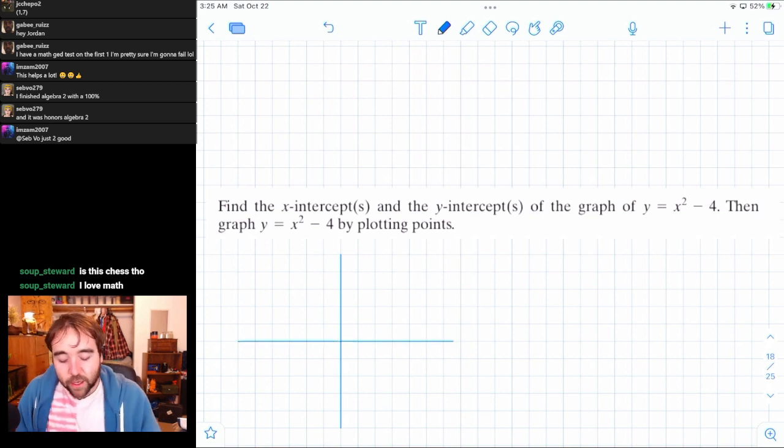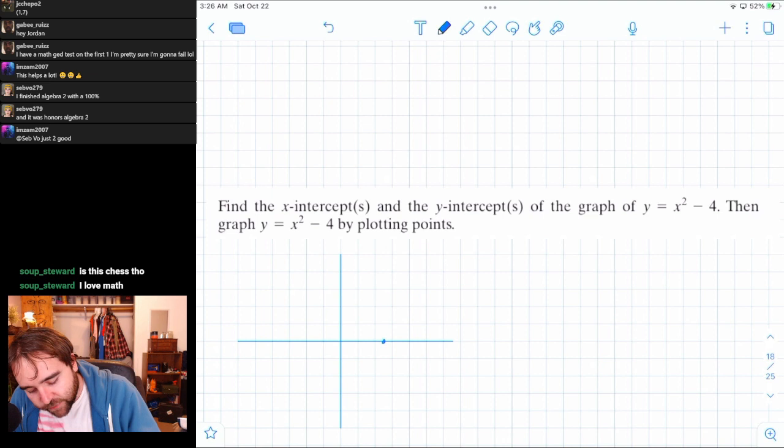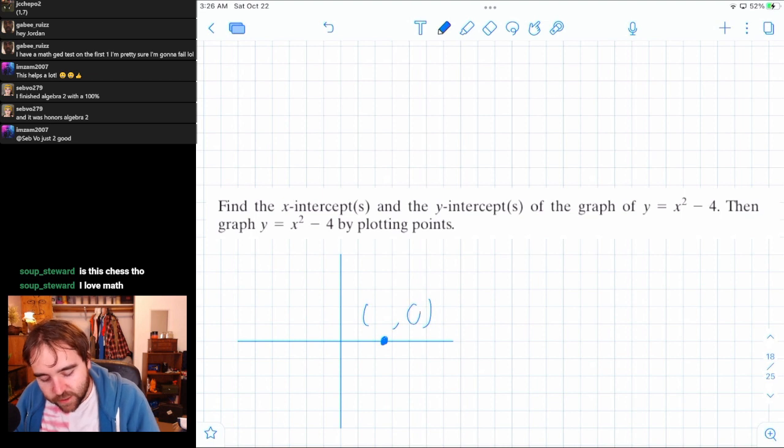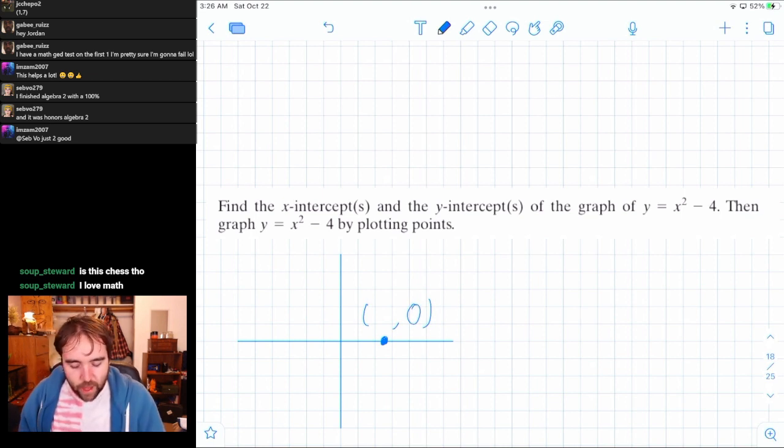So let's plot like an x-intercept. This is the x-intercept, or a x-intercept. And here's my question: What is the y-value of that x-intercept? It's zero. And the y-value of any x-intercept is always zero, right?